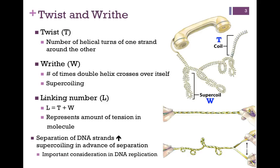Let's first define the terms twist and writhe. The twist is the number of helical turns of one strand around the other — in other words, how many times does one strand wrap around the other to form the double helix. In our illustration of the phone cord at the upper right, the coil at the top represents the twist.